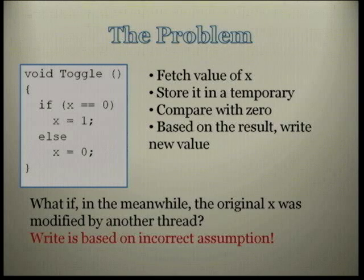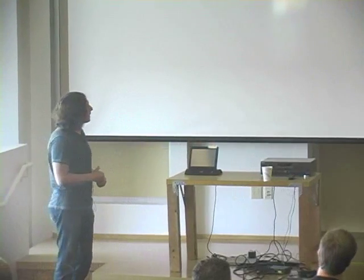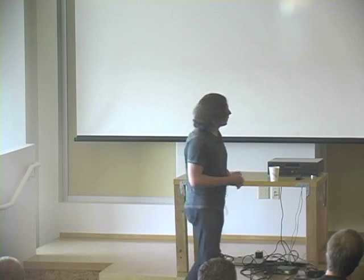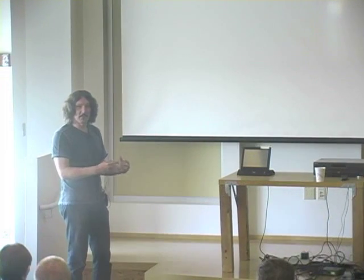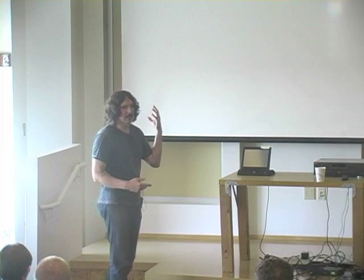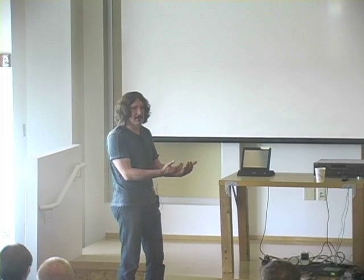The problem is that at the moment we are writing, the value of X could have already changed. We are dealing with a cached value that isn't necessarily equal to what's in memory, and there's a time lapse between when we fetch it and when we write. The error we're making is writing based on incorrect assumptions — we read X, see it's 0, assume X is 0, write 1, but our assumption got invalidated in the meanwhile.